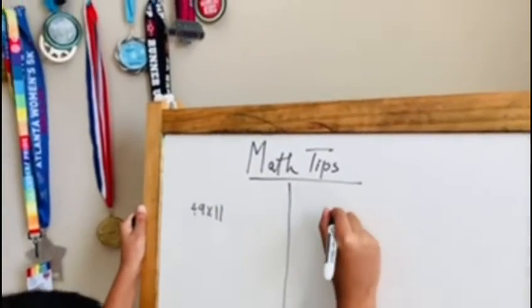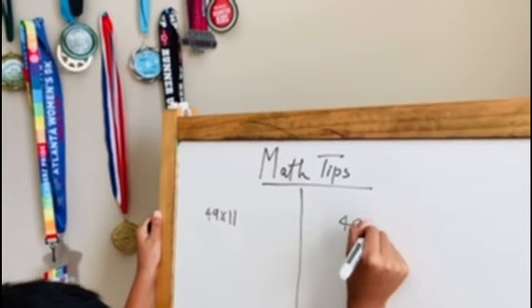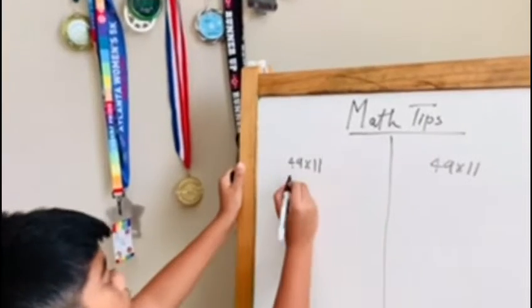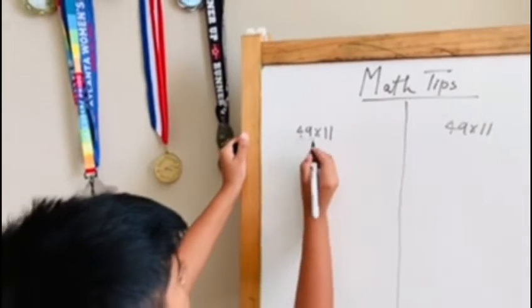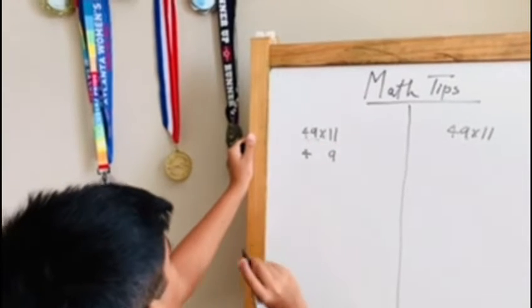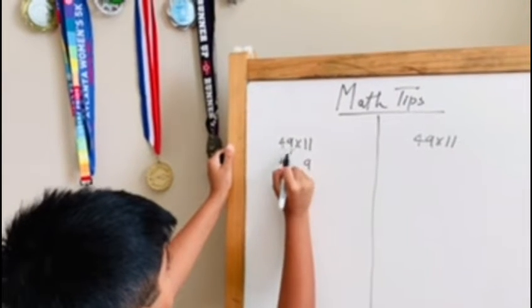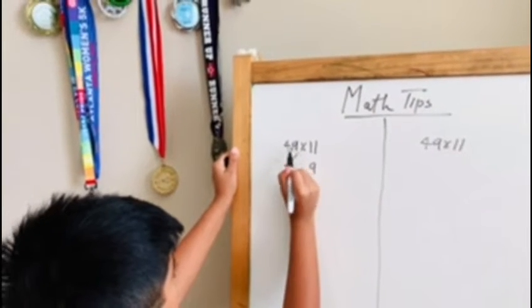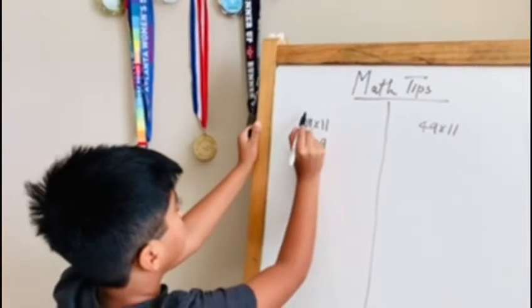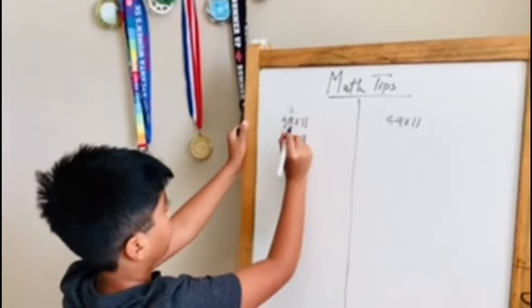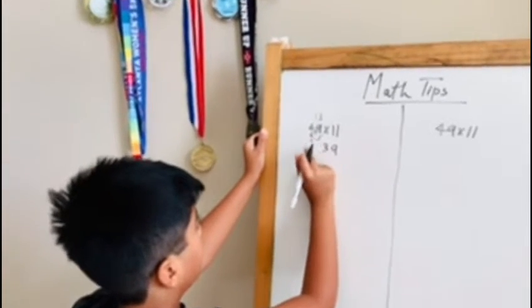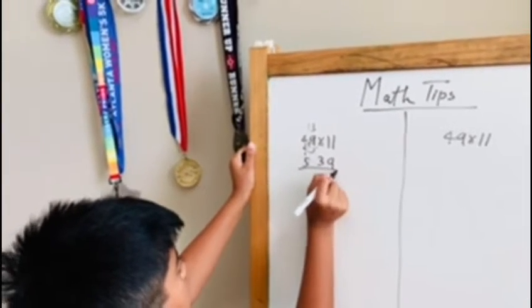There are two methods for this. I'll show you the second method after the first. For the first method, whatever your first and last digits are, you put those. So 49, those are my first and last digits. Second, I add these two numbers. If I add them, I get 13. I put the 3 here, carry the 1, and this becomes a 5. So the answer is 539.